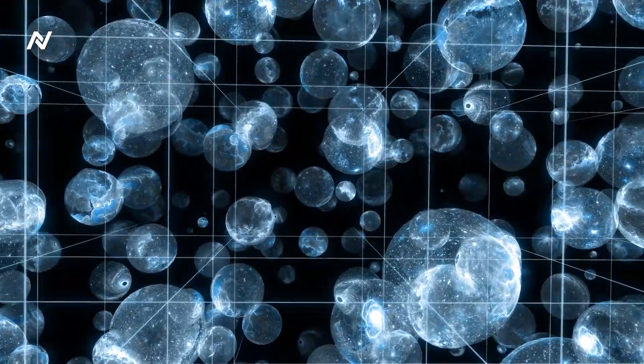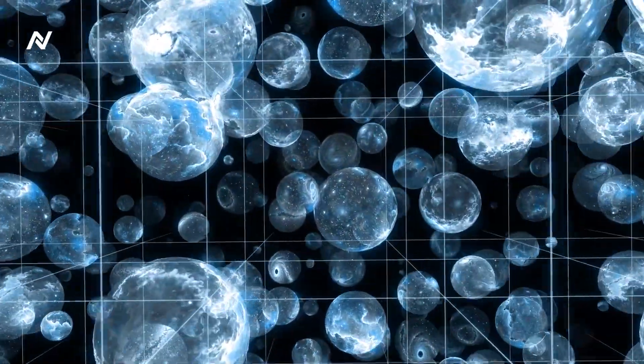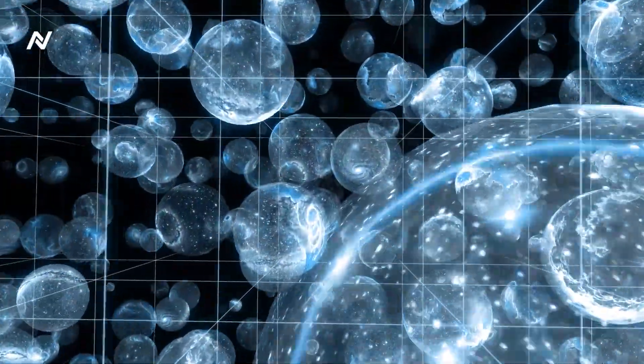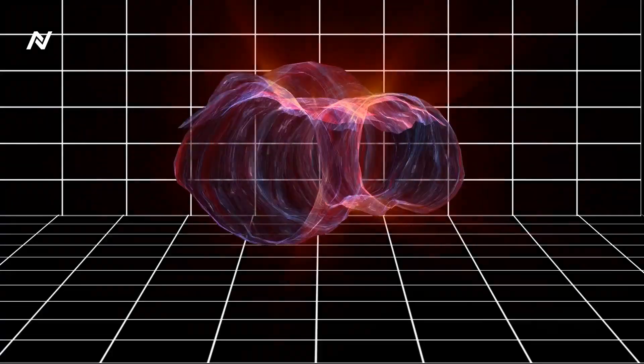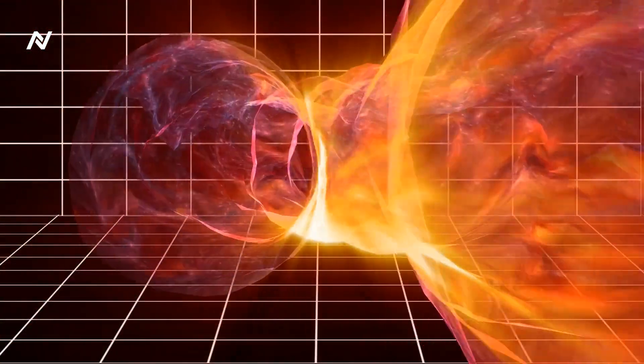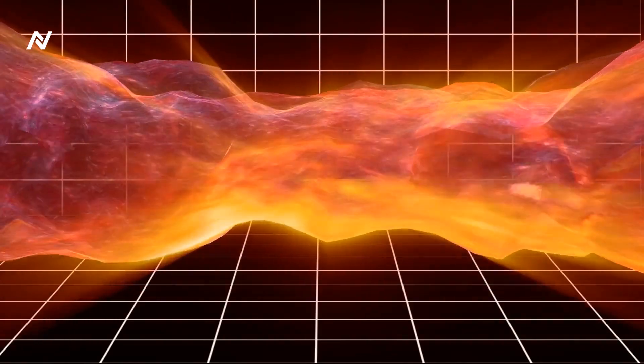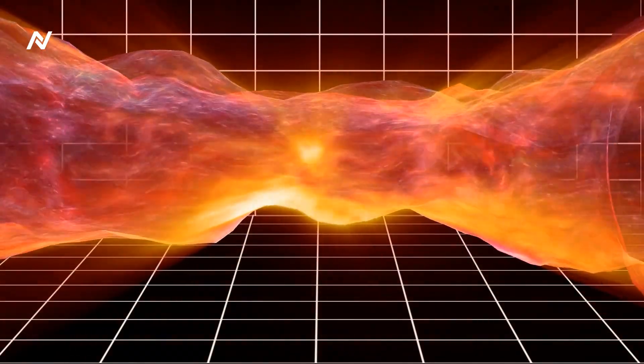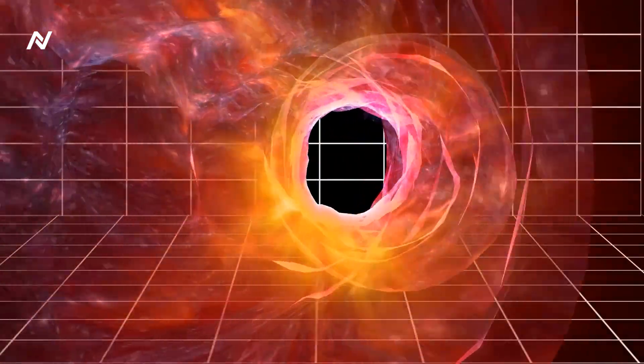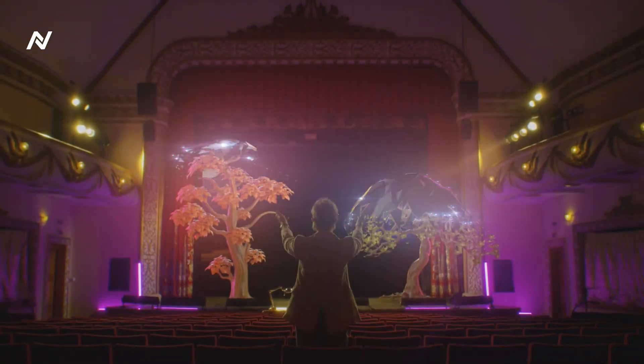One of the most mind-bending theories in modern physics is that the universe we live in may actually be a hologram. This means that everything you experience in three dimensions, height, width, and depth, might be encoded on a two-dimensional surface somewhere far away. If that's true, the very fabric of reality might be an illusion. Your sense of space, time, and physical objects could just be a projection of information from another plane of existence.